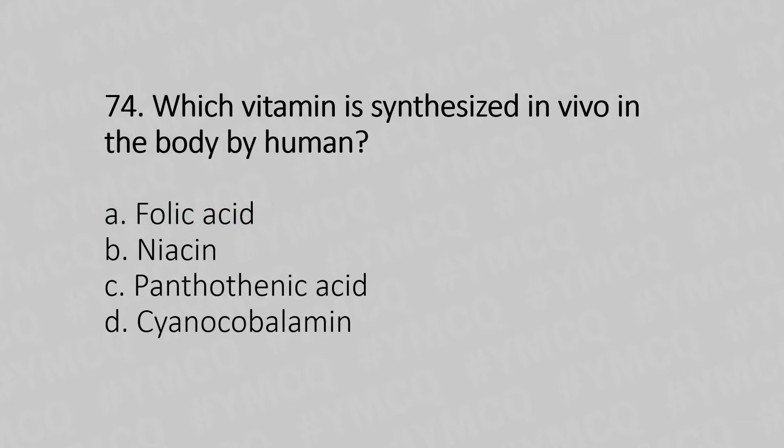Question 74: Which vitamin is synthesized in vivo in the body by humans — option A: folic acid, option B: niacin, option C: pantothenic acid, option D: cyanocobalamin. The answer is option B: niacin.